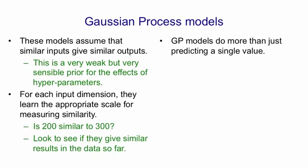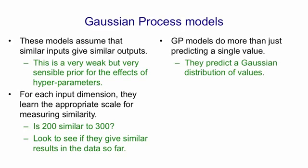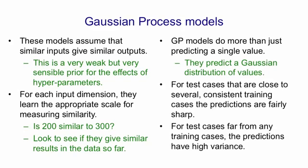It's important that Gaussian process models do more than just predict the expected outcome of a particular experiment — that is, how well the neural net will do on a validation set. In addition to predicting a mean value, they predict a distribution, a variance. They're called Gaussian processes because their predictions are Gaussian. When making a prediction for new hyperparameter settings close to several consistent settings already run, predictions will tend to be fairly sharp — low variance. But when predicting for experiments where the hyperparameters are very different from anything tried so far, predictions will have very high variance.